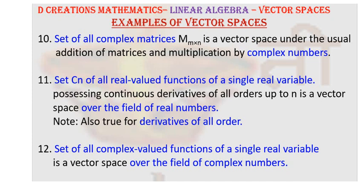What about functions? So, if there is a set of all real valued functions of a single variable, that forms a vector space. Now, that can be true for derivatives of only up to nth order or derivatives of all order. Similarly, set of all complex valued functions of a real variable is also a vector space over the field of complex numbers.